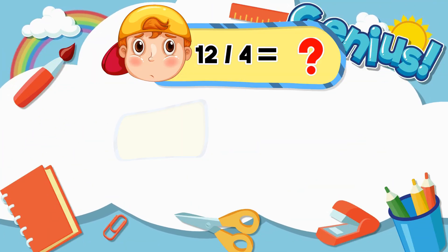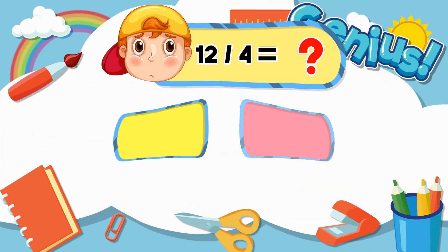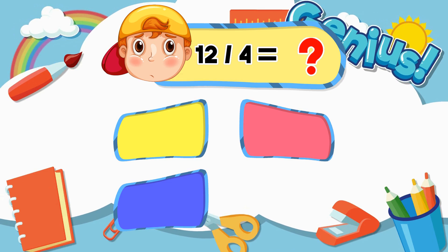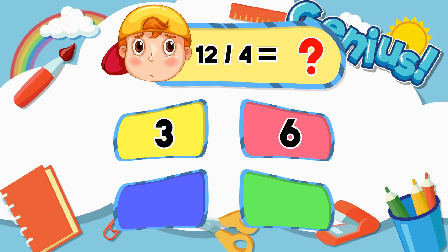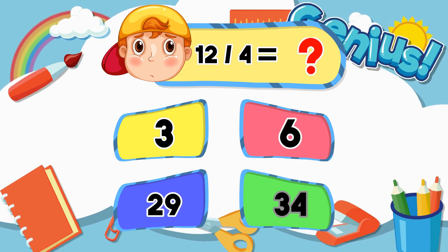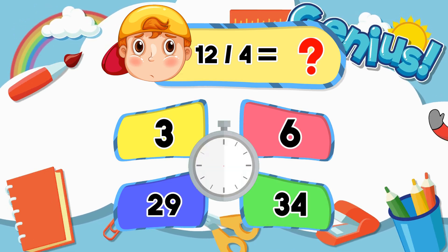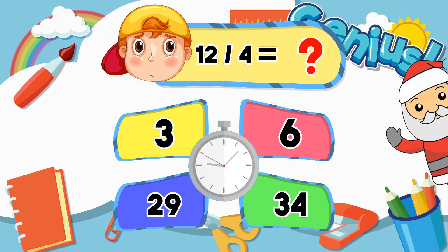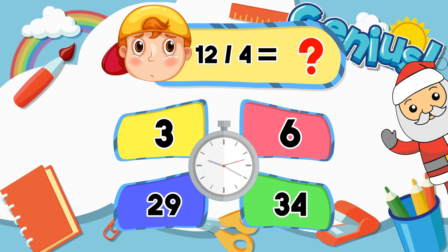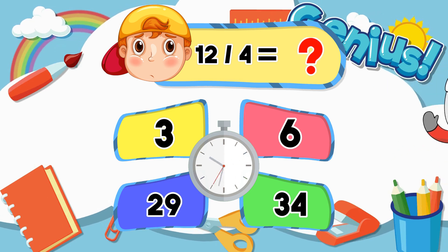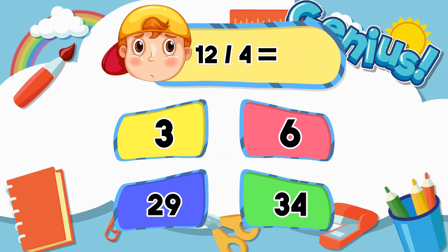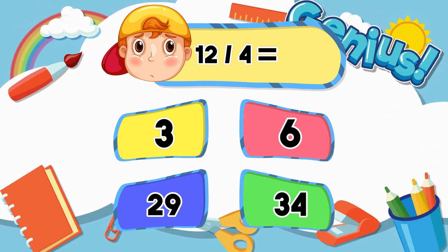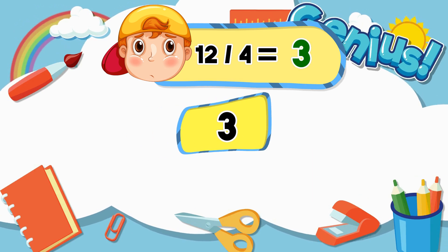What is 12 divided by 4? Options: 3, 6, 29, 34. The answer is 3.